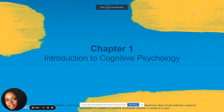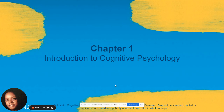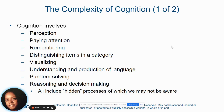I want to go over chapter one with you today so you have a good understanding of what the material is about. This chapter is an introduction to cognitive psychology, and we're going to talk a lot about the history that made cognition a big part of the field of psychology. To start out, when we think about the word cognition, we have to think about a definition that explains what the word means.